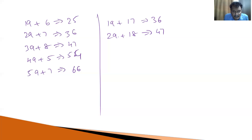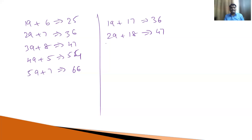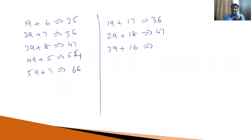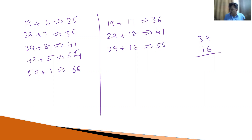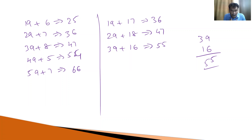If you observe, just convert these numbers into the nearest rounded number. What is the nearest rounded number related to 29? That equals 30, right? So 29 plus 18 equals 30 plus 18, which is 48, minus 1 equals 47. Suppose 39 plus 16: what is the nearest rounded number to 39? That is 40. 40 plus 16 is 56, minus 1 equals 55. No need to count one by one — just use your common sense. What is the nearest rounded number for 39? 40. 40 plus 16 is 56, minus 1 is 55.